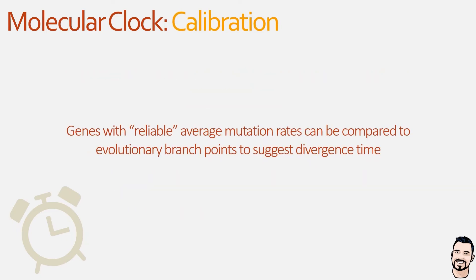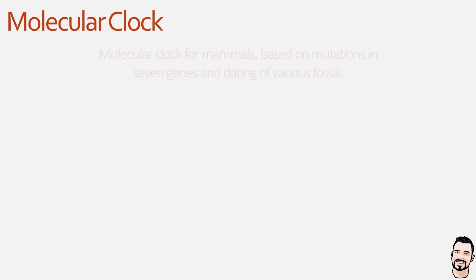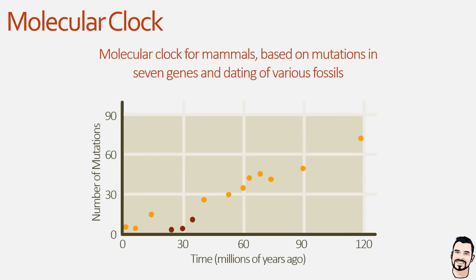In order to use a species' genome as a molecular clock, we must account for a few important things. We need to look at mutations in genes that have a relatively stable and reliable mutation rate, allowing changes to be tracked back to identify evolutionary branch points with common ancestors and predict speciation events. We can then compare genetic differences against our fossil records. If we graph the mutation rate of key genes over time, we can see that more mutations generally accumulate as more time passes, and there is a somewhat linear relationship between the accumulation of mutations and the amount of time that has passed.